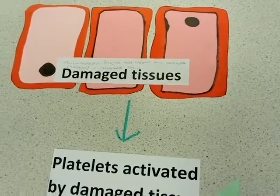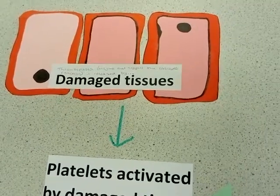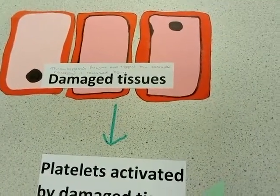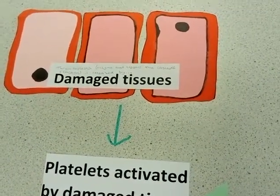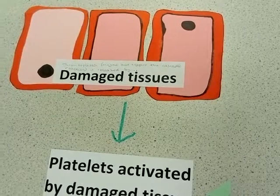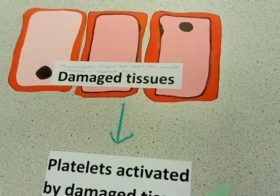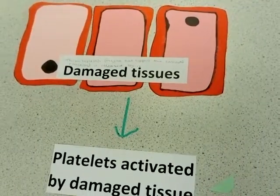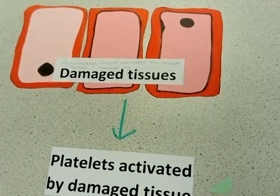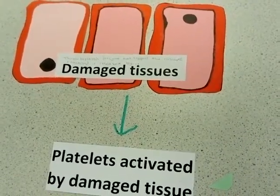It starts off with tissues being damaged. When tissues are damaged, an enzyme is released that triggers the cascade reaction.